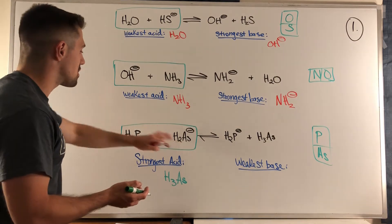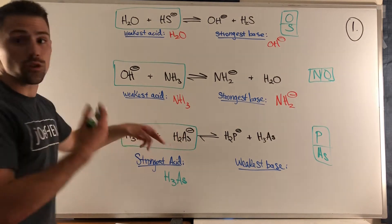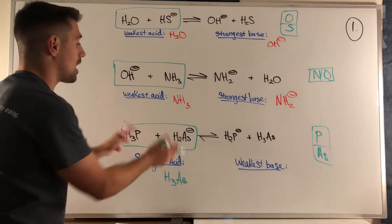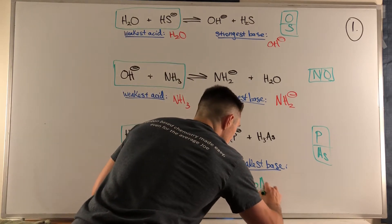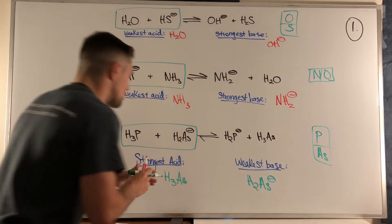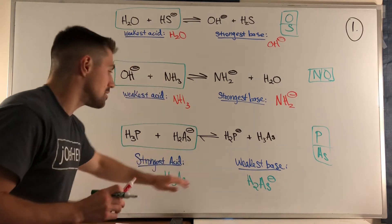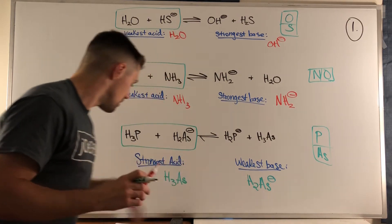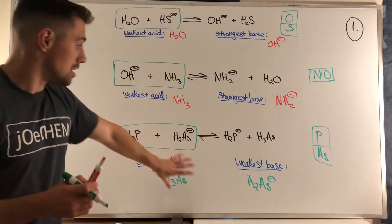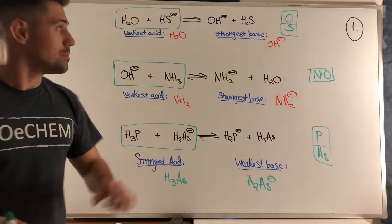And the weakest base - well, the weakest base is gonna be on this side and it's gonna be the side that's looking to pick up H plus on this side, but it's the weakest base. So this would be the H2As minus. So really we just got a conjugate acid-base pairing right here that we had to answer.